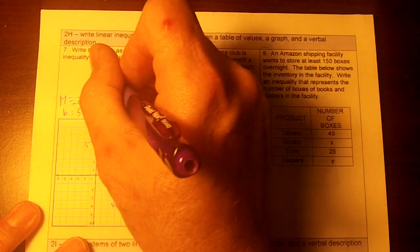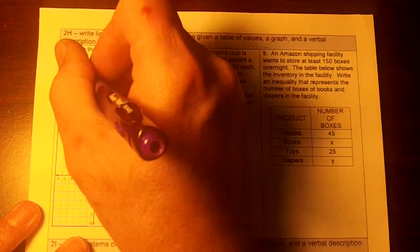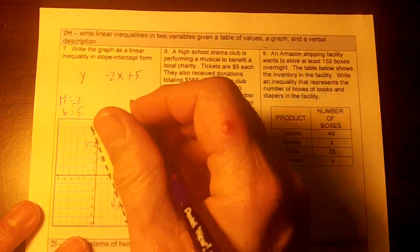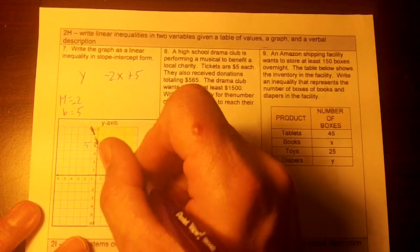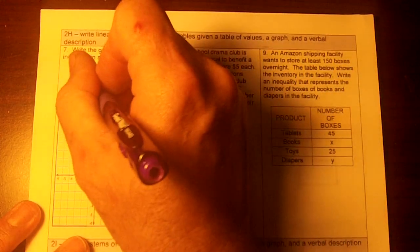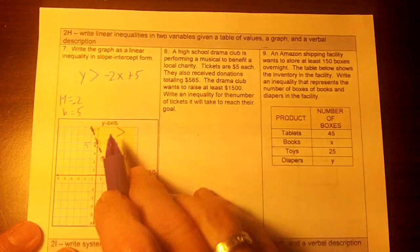So my mx plus b is negative 2x plus 5, and I have y. Now then, the line is dashed, so there's not going to be an equal bar, and it's shaded up, isn't it? If it's shaded up, you're going to use greater than. So this is the equation from the graph.